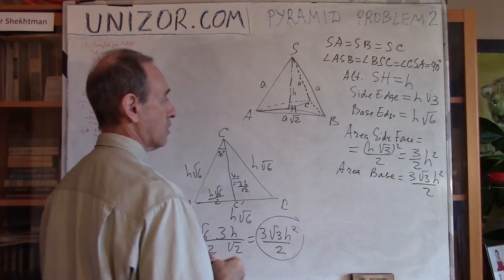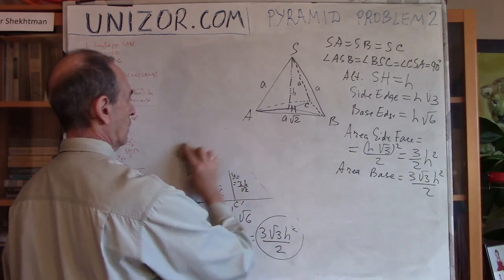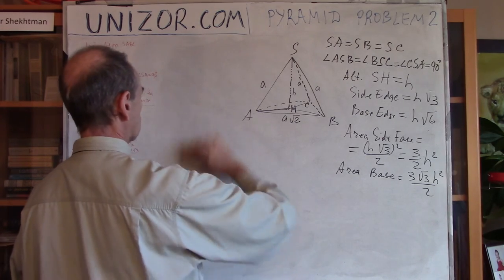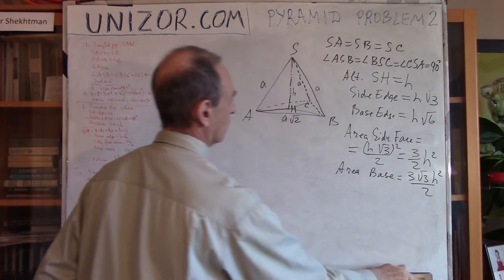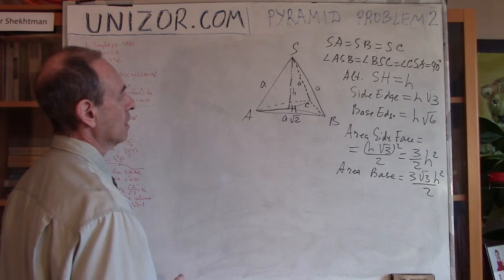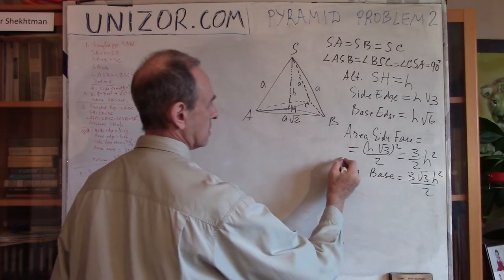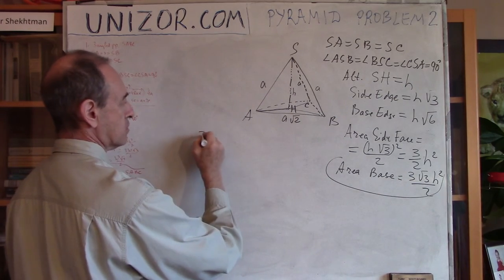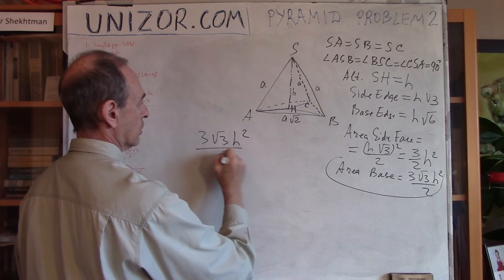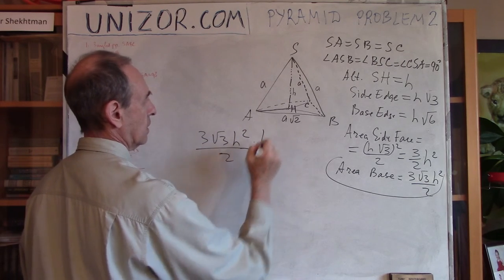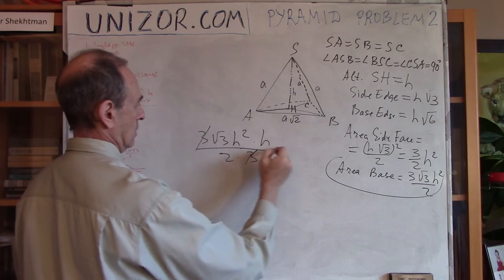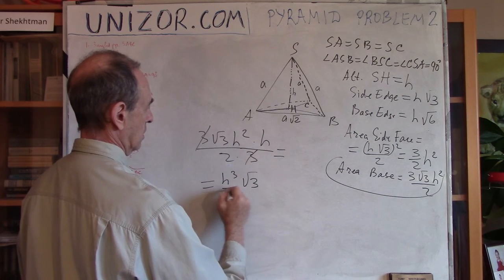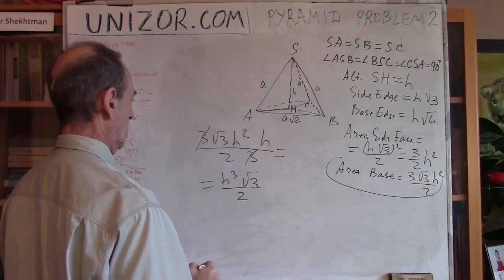We have determined all 4 face areas. All that's left is the volume. Volume is easy because we now know the area of the base and the altitude. Volume = (area of base × altitude) / 3 = (3√3 H²/2 × H) / 3 = H³√3/2. That's the volume.